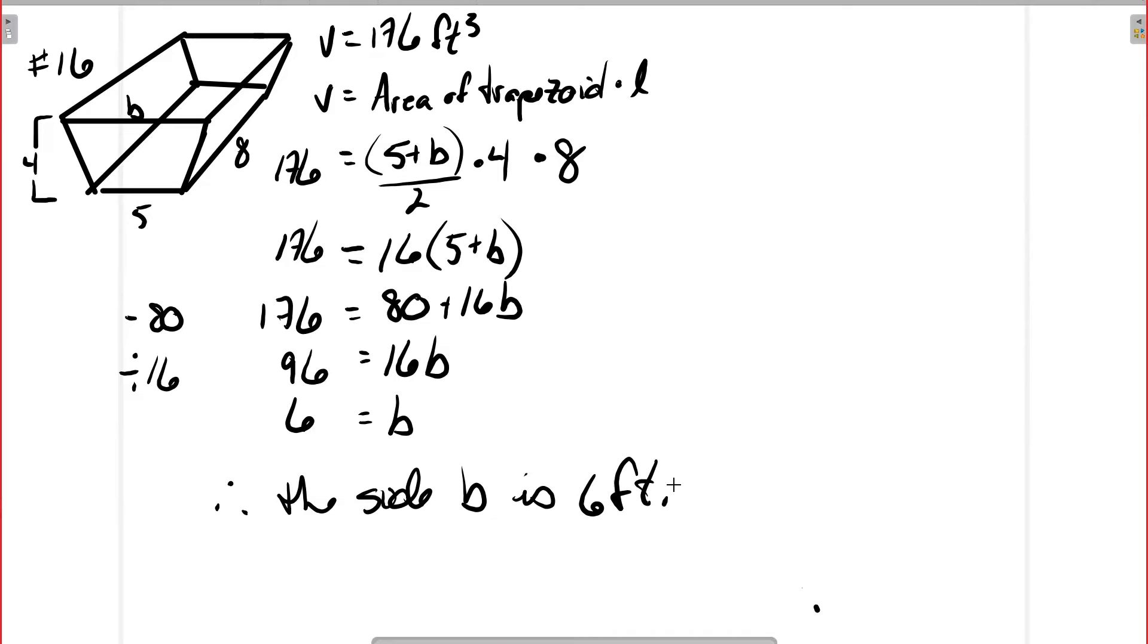Number 17. In this case, we have a cylinder. The cylinder has a volume of 314 cubic centimeters and a radius of 5 centimeters, and we're asked to find the height h.